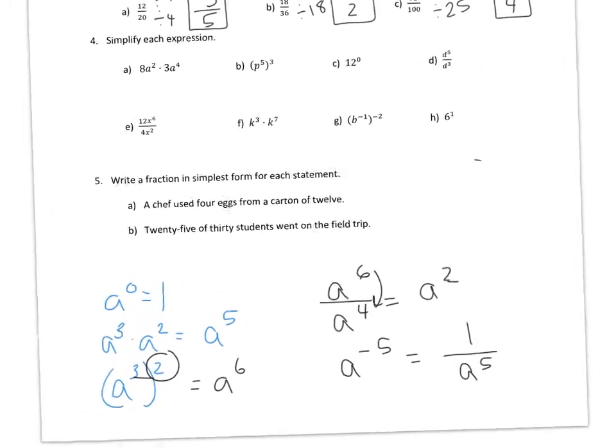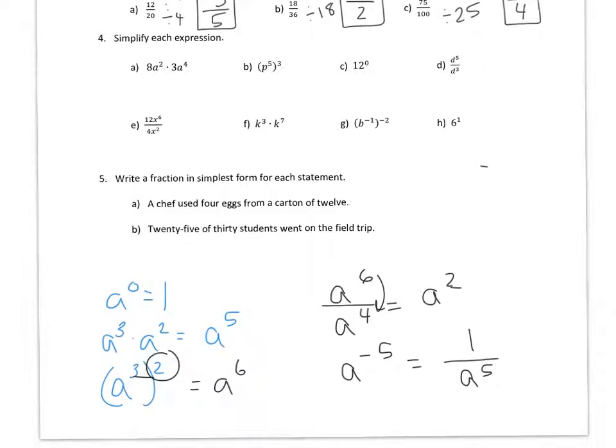So 8A, well I should keep the properties on here. 8A squared times 3A to the fourth. You're going to multiply 8 times 3 because those are the coefficients. So it's 24A, but then you're going to add the exponents, A to the sixth. B, there's a little parenthesis, so you're going to multiply. 5 times 3 is 15.